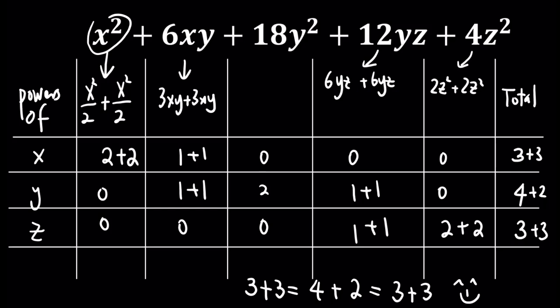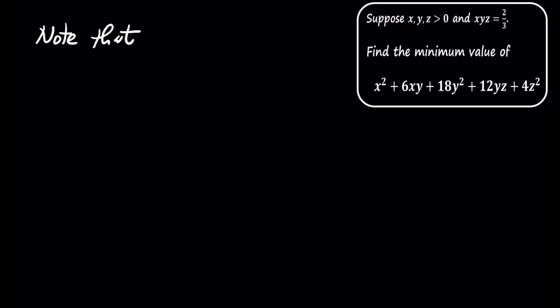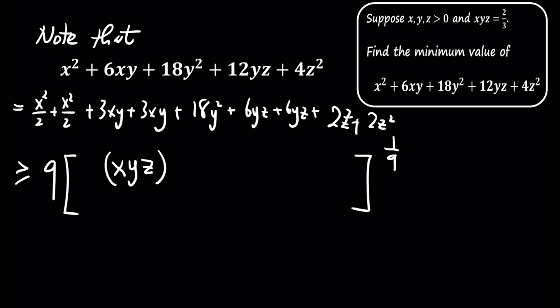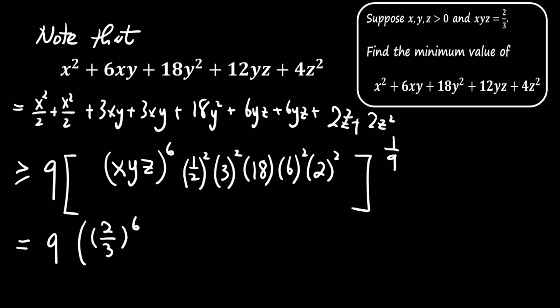After balancing the powers, we rewrite the expression in a form that's easier to handle. We can express it as the product of xyz raised to the sixth power, multiplied by various constants. By applying the AM-GM inequality and substituting xyz equals 2/3, the expression is at least 18.